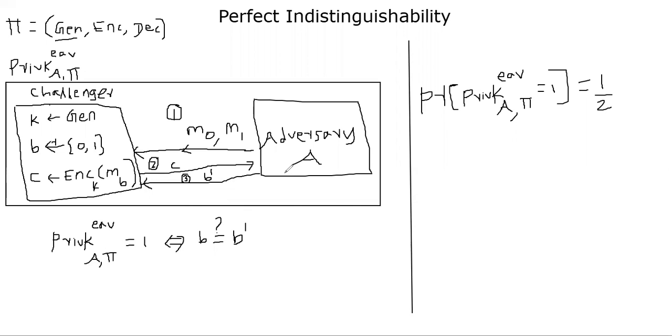So in the context of perfect indistinguishability, the way we define security is that no adversary can win with the probability better than half. The half is the uniform random guess any adversary can make. So this is how we define perfect secrecy using the notion of indistinguishable encryption models. The adversary was not able to tell exactly whether the message M0 was encrypted or M1 was encrypted.